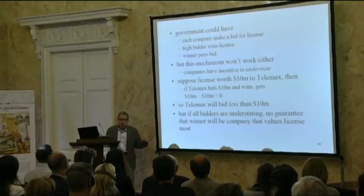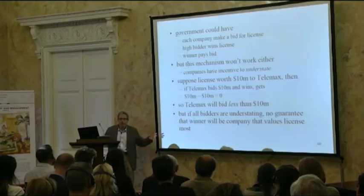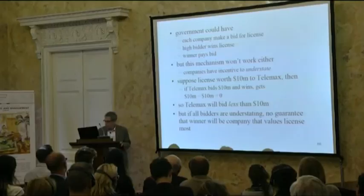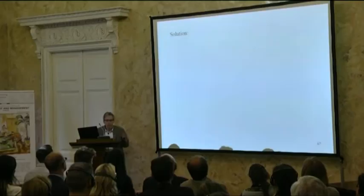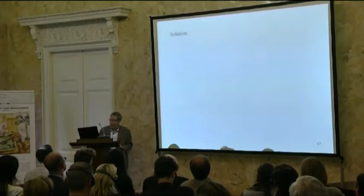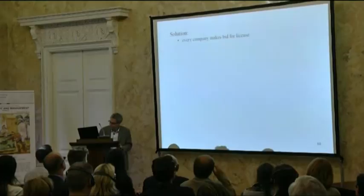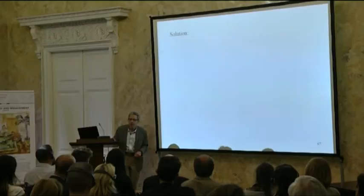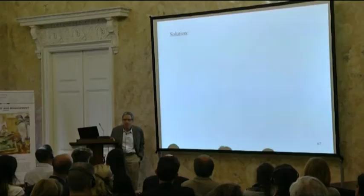So is there a mechanism that gets it exactly right — stopping companies from exaggerating but also stopping them from underbidding? It turns out the answer is yes. The solution was discovered about 55 years ago by American economist William Vickrey, and for that reason it's sometimes called the Vickrey mechanism.